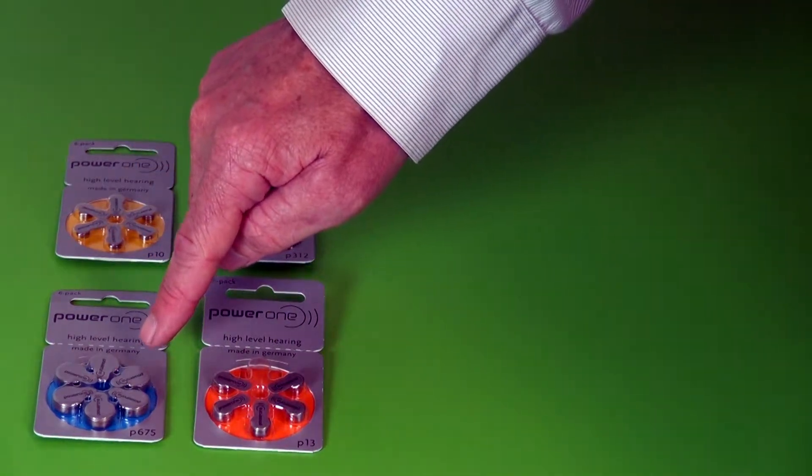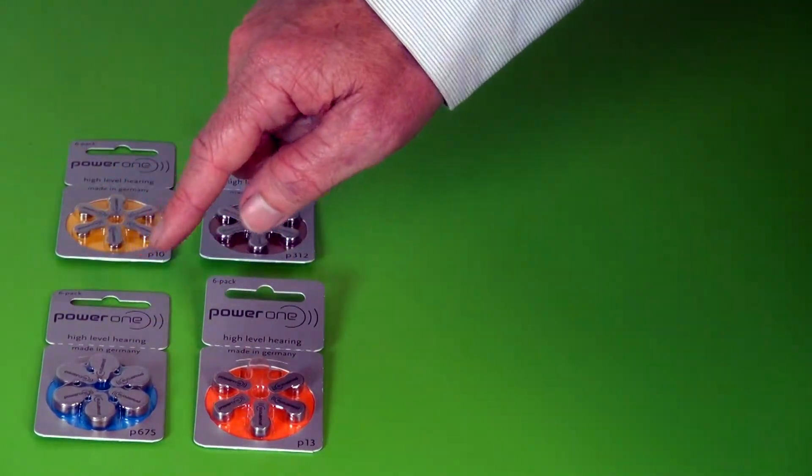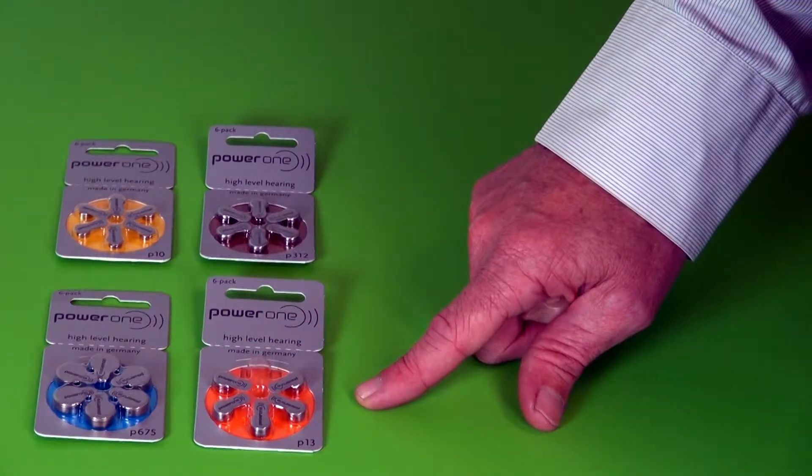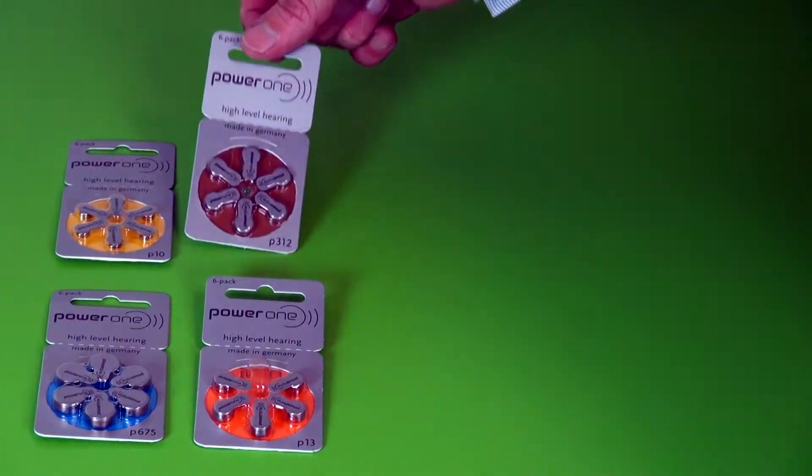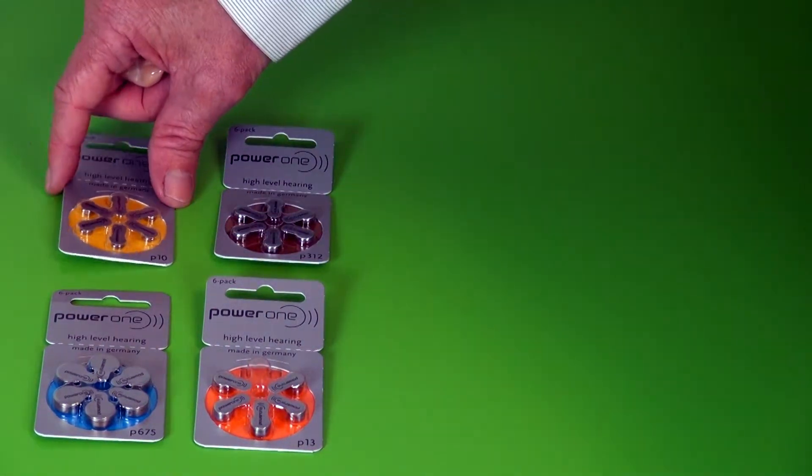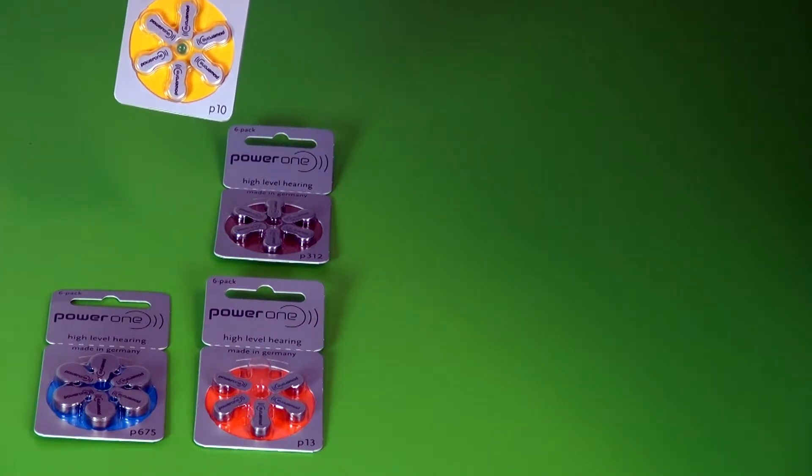The largest size is a 675 that has a blue background. The most popular size is an orange background with size 13 hearing aid. A size 312 has a brown background and then the smallest battery is a size 10 which has a yellow background.